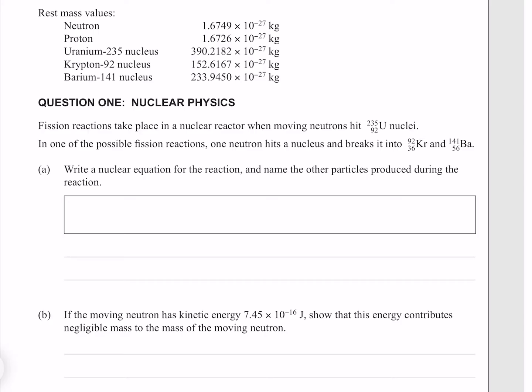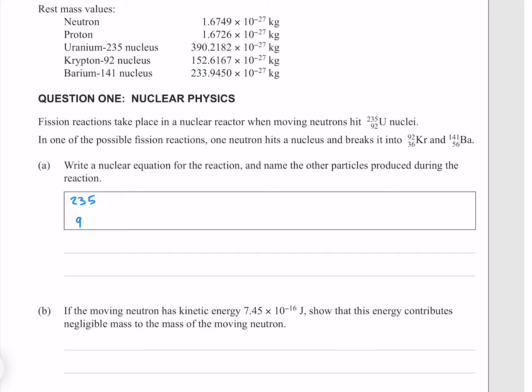Write a nuclear equation for the reaction and name the other particles produced during the reaction. So to start off, we have our uranium-235, which is being hit with a neutron, where a neutron has an atomic mass of 1 and an atomic number of 0. Following the fission reaction, we have our krypton plus our barium and possibly something else.